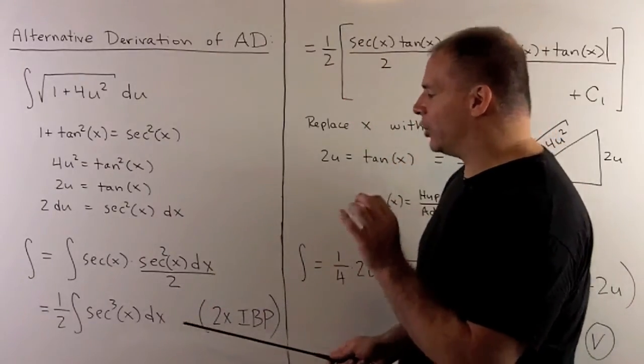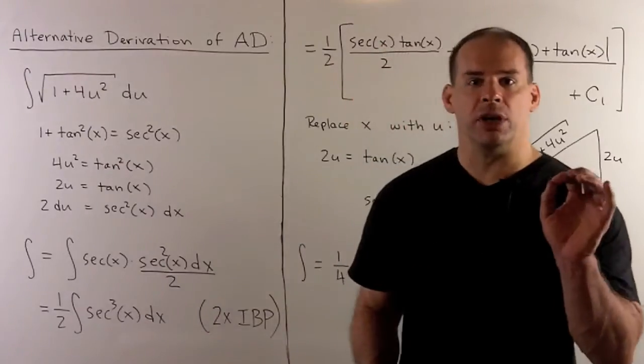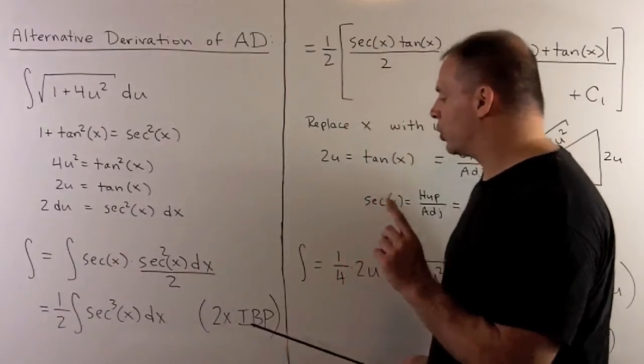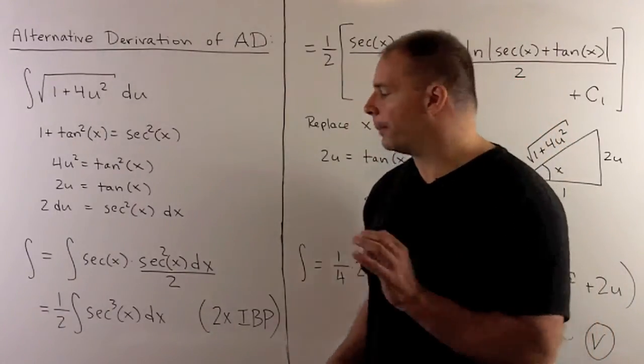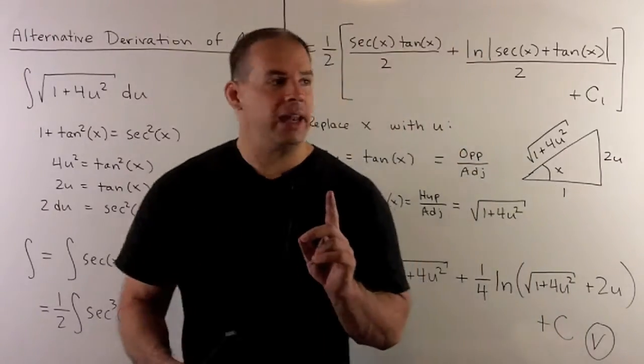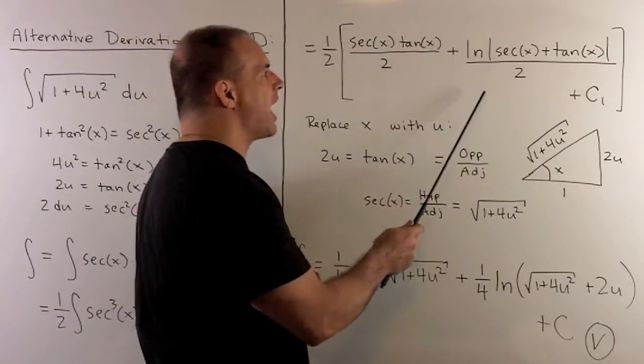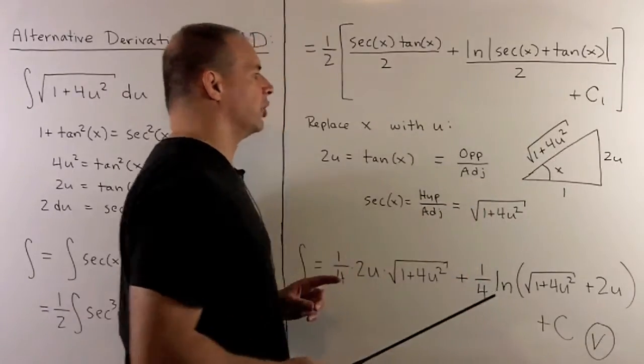Now I need the antiderivative of secant cubed of x. That's a video in itself. What we need to compute this is integration by parts twice. When we figure this out, what we get is 1 half secant x tanx over 2 plus natural log absolute value of secant x plus tanx over 2 plus our constant of integration.